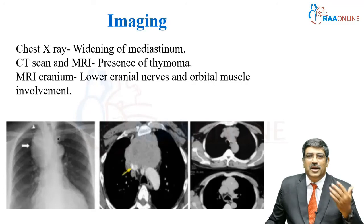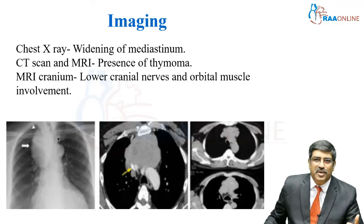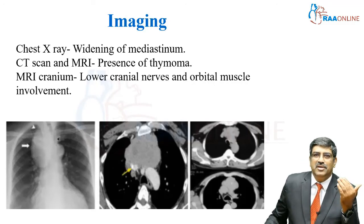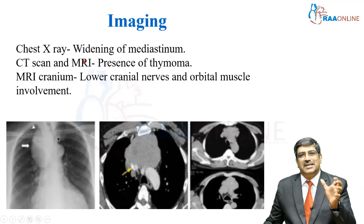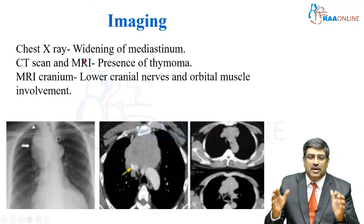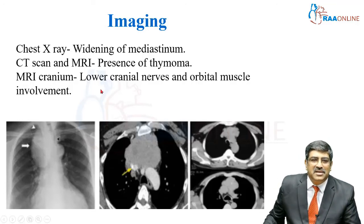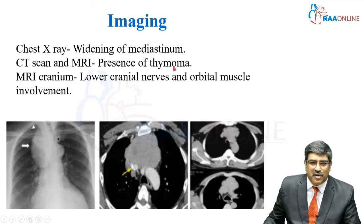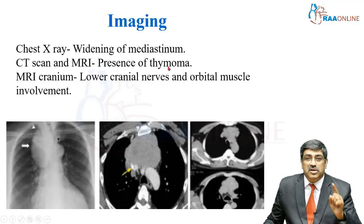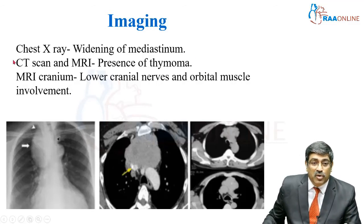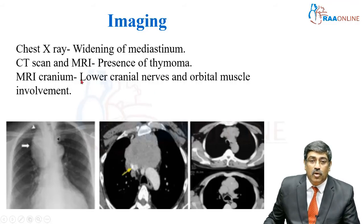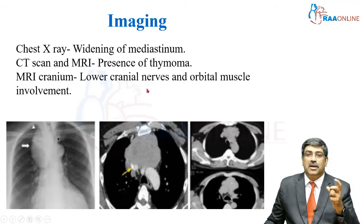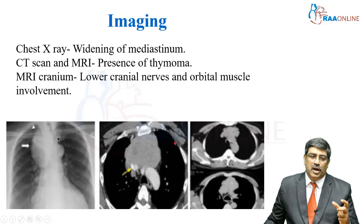Coming to imaging modality, because of the association of myasthenia gravis with thymoma. On chest X-ray, you can see widening of the mediastinum. With CT scan and MRI, there might be a presence of thymoma. Most of the time, you have to do an MRI cranium to rule out cranial nerve and orbital muscle involvement.